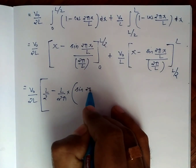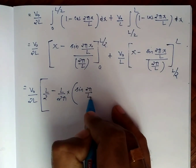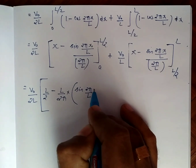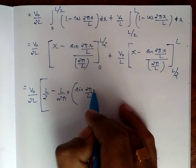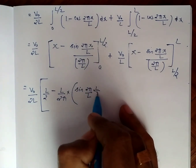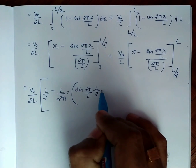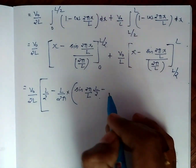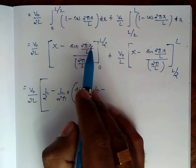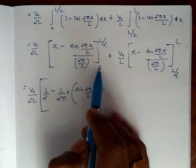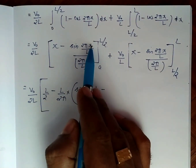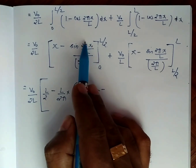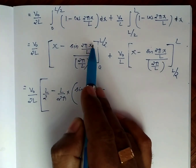Substituting the upper limit L/2 into sin(2 pi x / L): sin(2 pi / L times L/2) = sin(pi), and subtracting the lower limit 0 where sin(0) = 0.